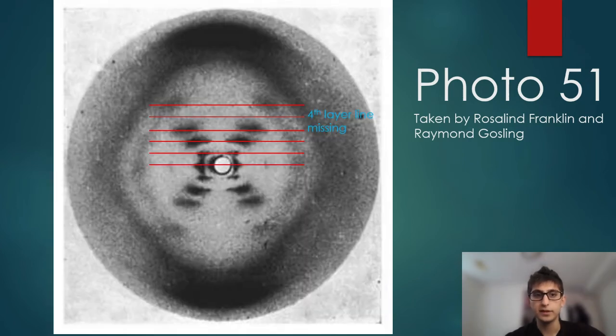There would be an expected fourth layer line that appears to be missing. This indicates that DNA is asymmetrical, and it provided a clue to the presence of a minor and major groove of DNA.